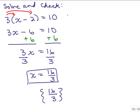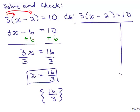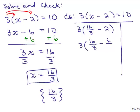Let's make sure that's correct by checking. So when you check it, we have 3 times the quantity x minus 2 equals 10. Checking is often more difficult than solving. We're going to plug in 16 thirds for x inside the parentheses. We are not going to do the distributive property — we use the order of operations, doing inside parentheses first. So I need to do 16 thirds minus 2. To do that, I need a common denominator of 3, so 2 becomes 6 thirds. 16 thirds minus 6 thirds is 10 thirds.